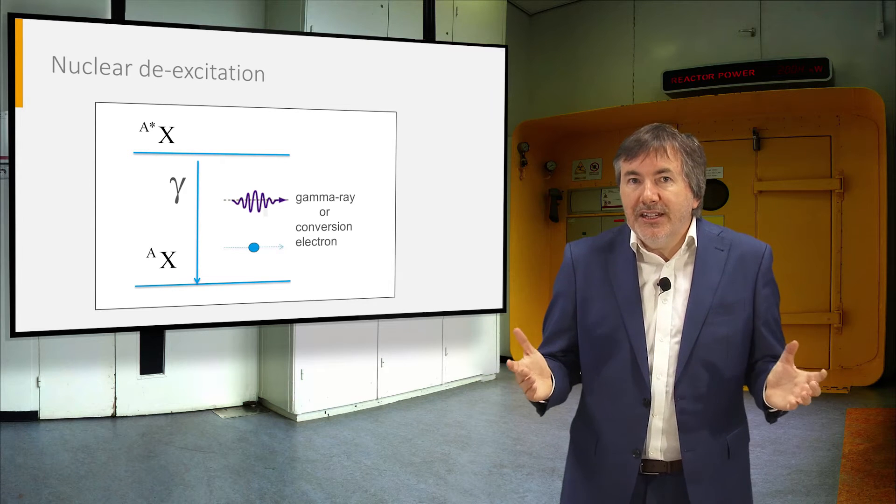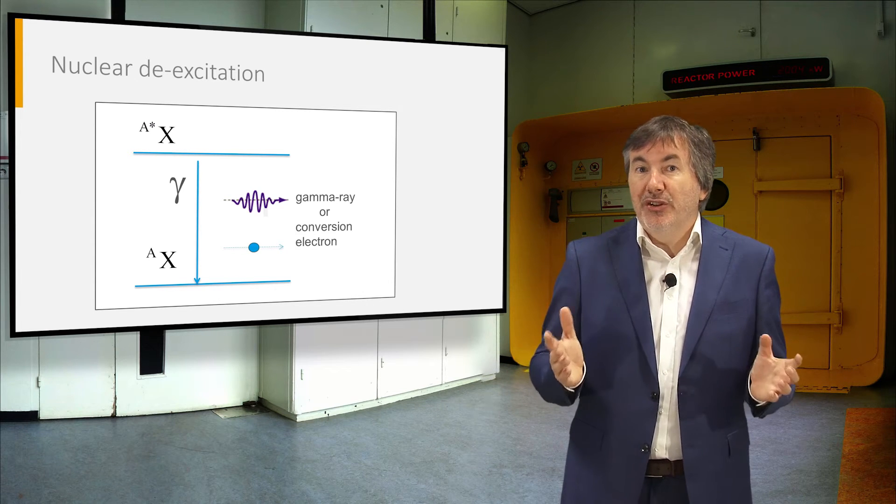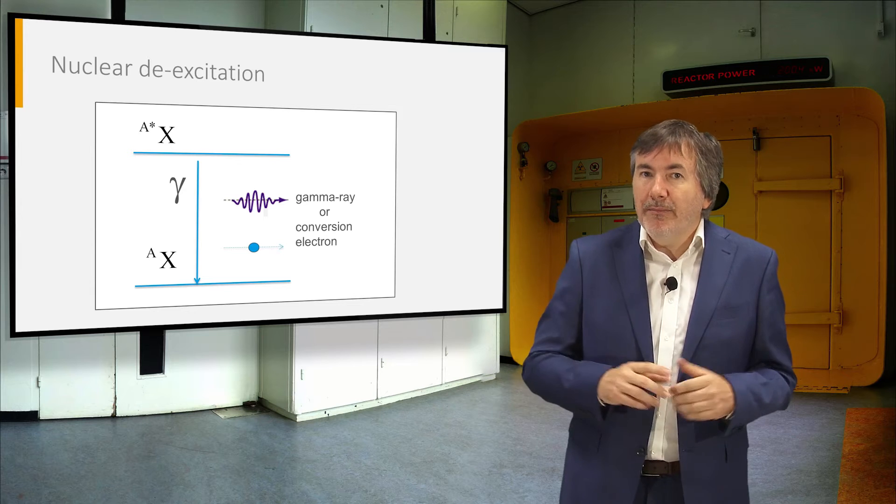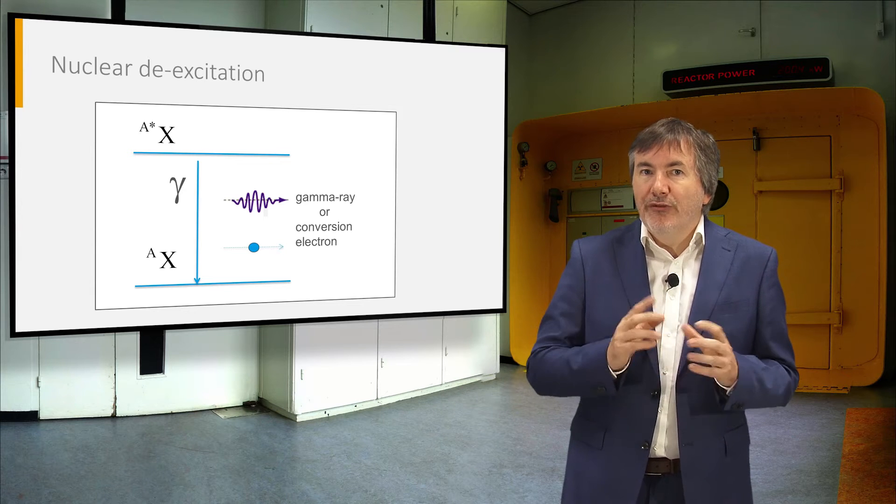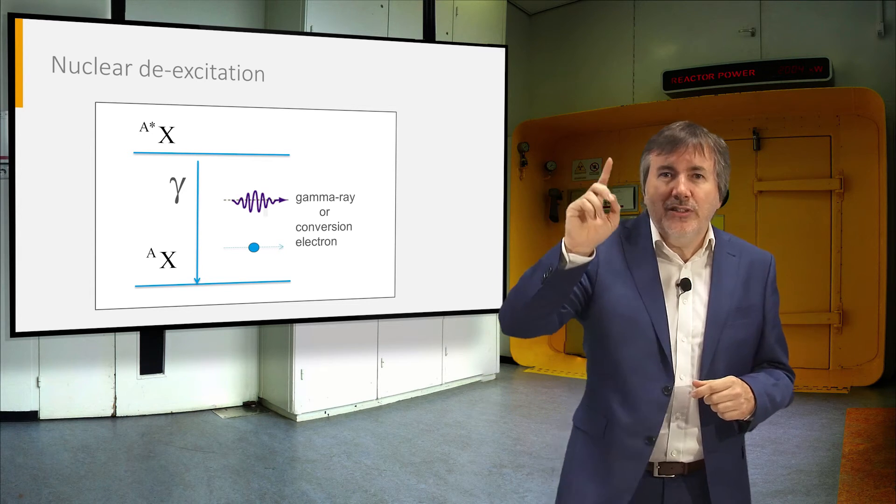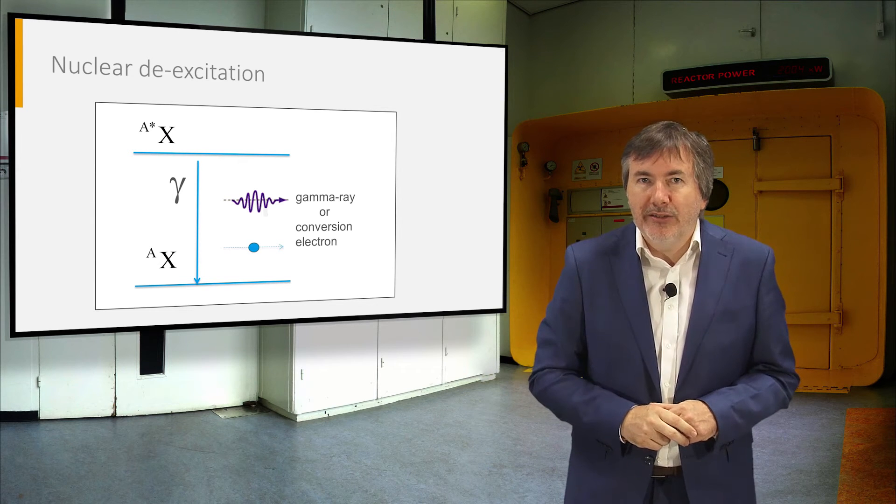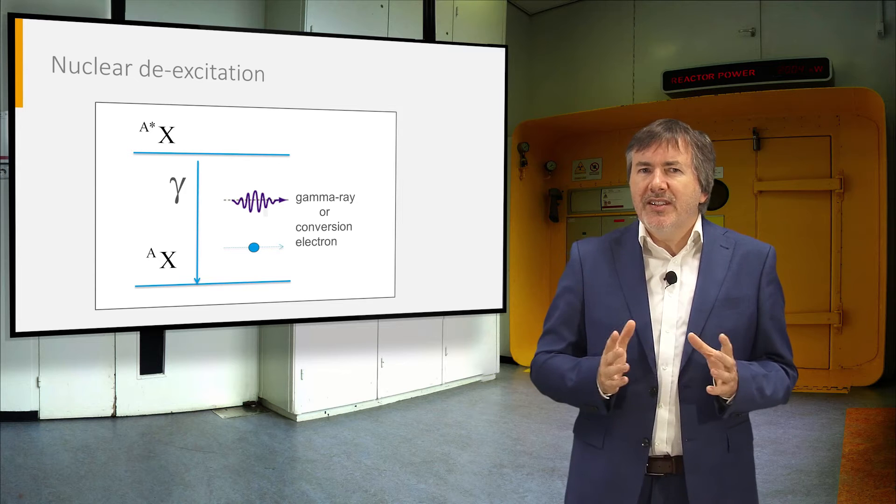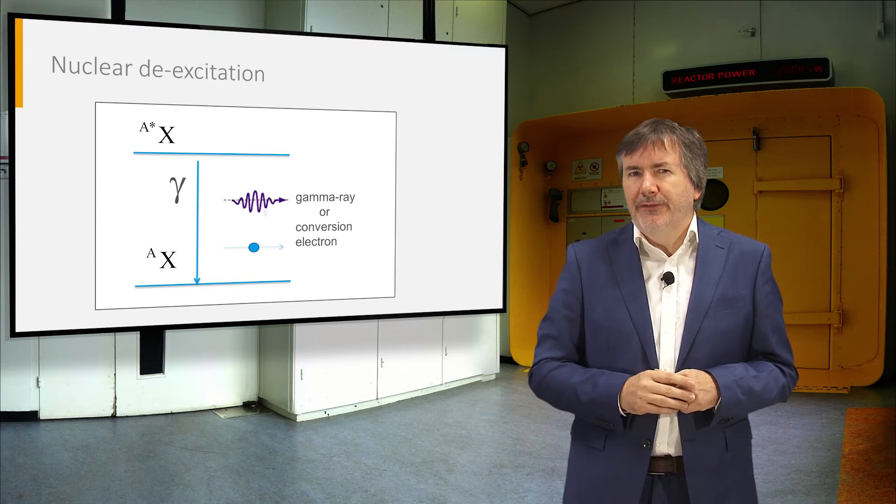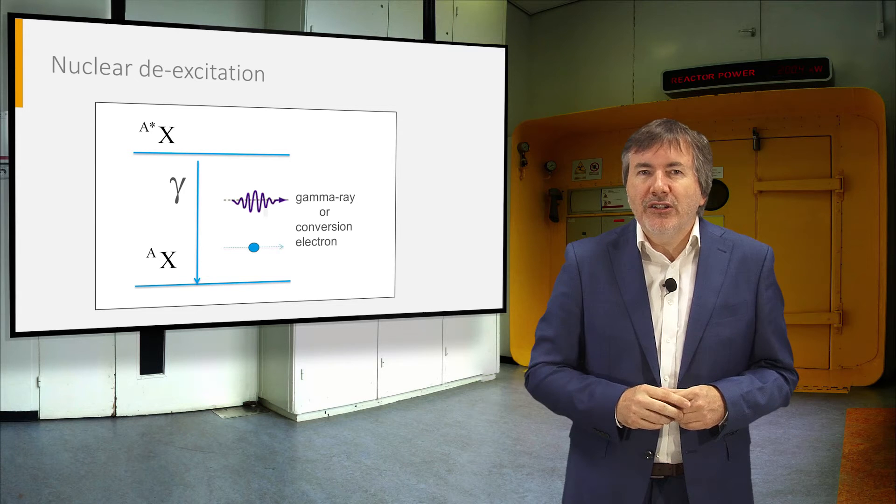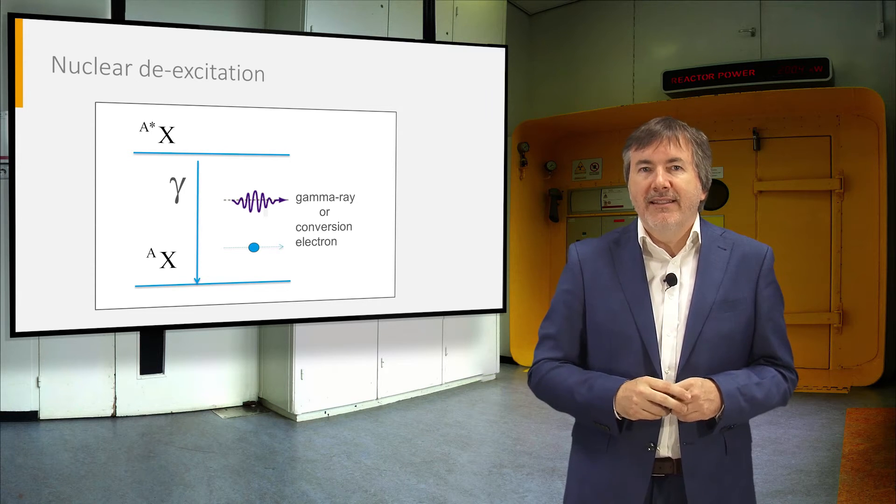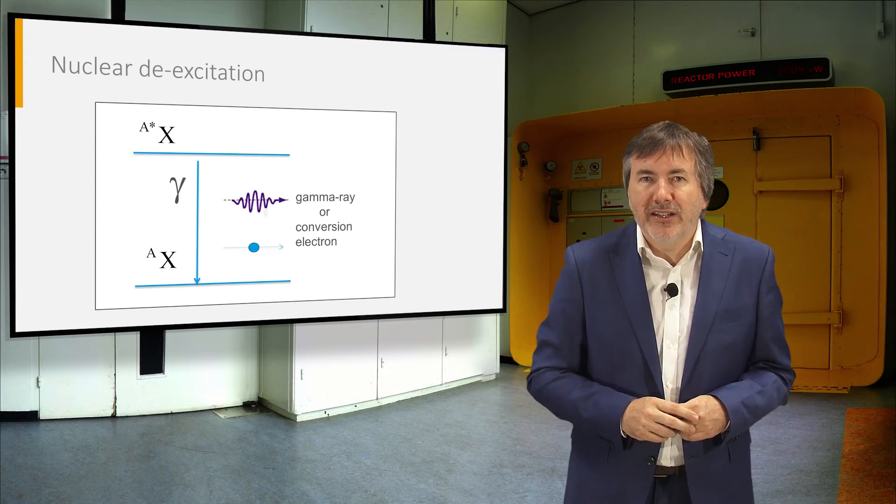Whereas the excitation energy is usually expelled through emission of gamma rays, sometimes the energy is converted to kick out an orbital electron, which is then called a conversion electron. Most excited levels in a nucleus are short-lived, but some live long enough to be called metastable states, and their decay is called isomeric transition.